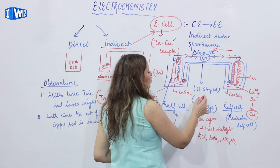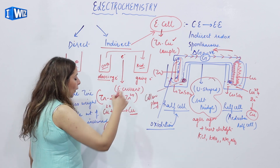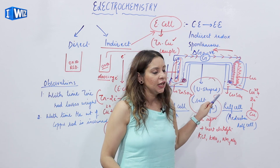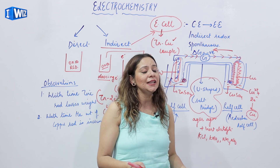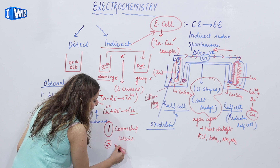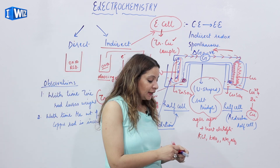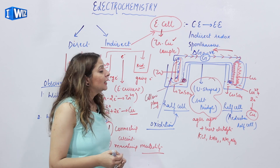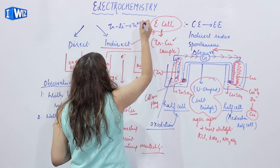You must be wondering about the use of the salt bridge. It serves two important functions. First, it completes the circuit by connecting the two solutions — the rods are connected by wire and the U-shaped tube connects the solutions, completing the internal circuit. Second, it helps in maintaining the neutrality of the solutions.